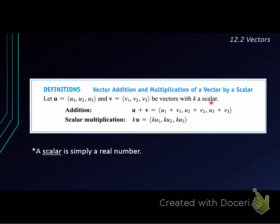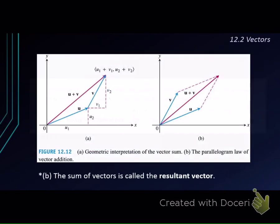So basically when we add two vectors, u plus v, we add the components respectively. So we have u1 plus v1, u2 plus v2, and then u3 plus v3.